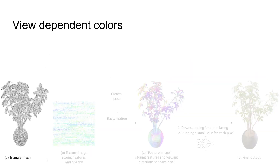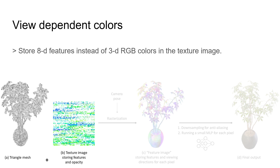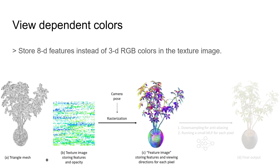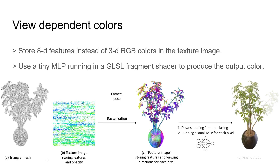We couple the triangle mesh with the texture map to add fine-grained details and colors. To model view-dependent colors, we store 8D features instead of 3D RGB colors in the textures. After mesh rasterization, we obtain a feature image, where each pixel stores a feature vector retrieved from the texture image and a viewing direction. Next, we use a tiny MLP implemented in a fragment shader to convert the per-pixel features and viewing directions into pixel colors.